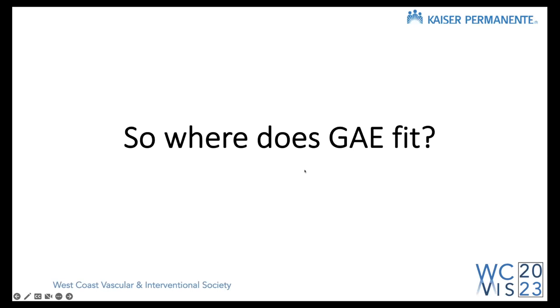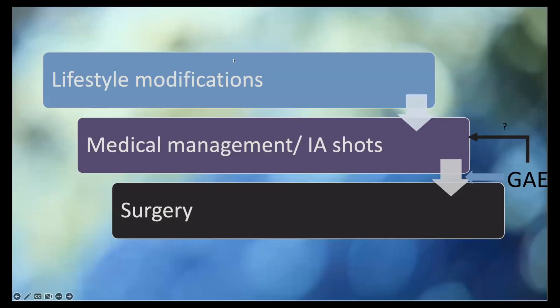Where does GAE fit in the big picture? Patients refractory to lifestyle modification and conservative therapy often see a surgeon and are told they're not quite at surgery yet — I call these people in 'osteoarthritic limbo.' That is where we can provide quite a lot of value. There may even be a question of earlier involvement, but the data isn't there yet. For those in OA limbo, I think we can really provide a great service.